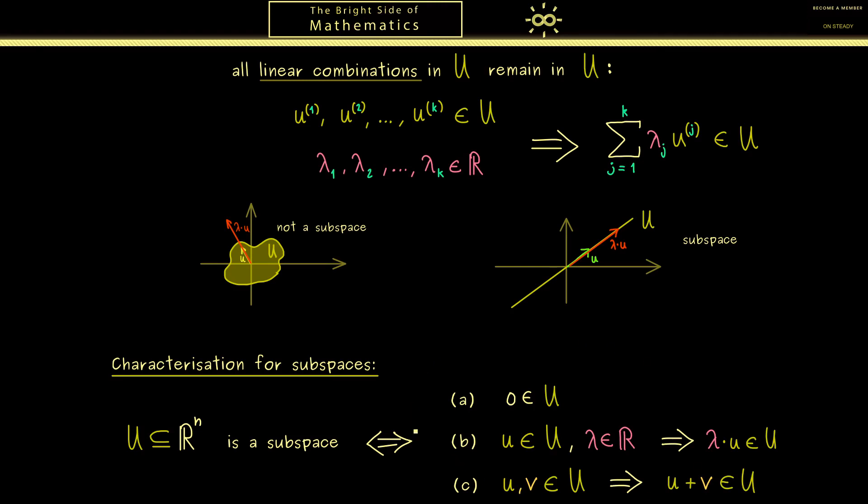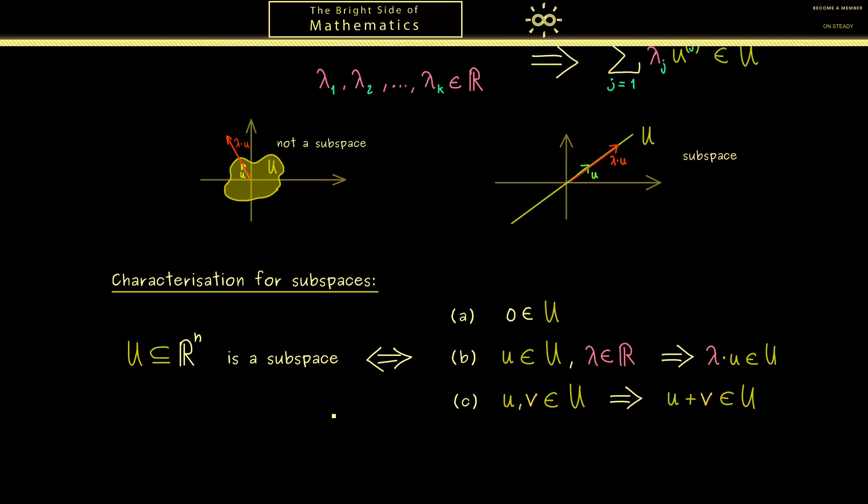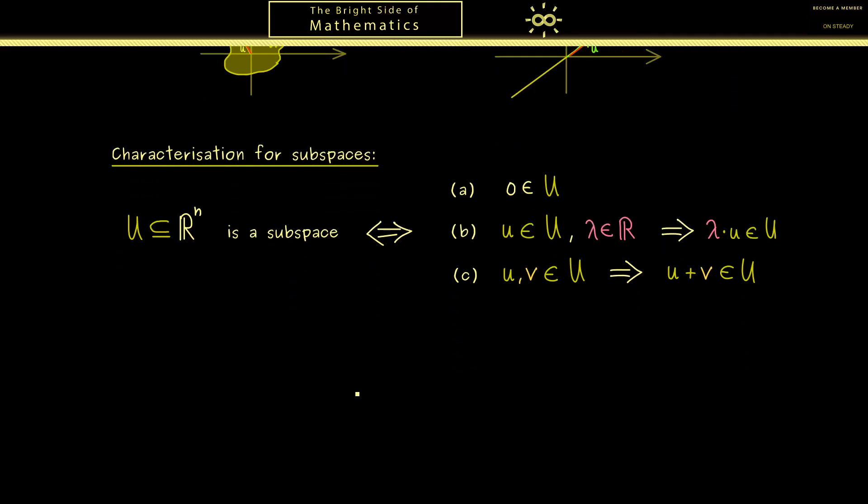Okay, so this is what you really should remember. This is how you can characterize a subspace. Indeed the proof using the definition from above is not hard at all. Essentially you just have to do a proof by induction. However I don't want to show you this now because I think we first should look at examples.